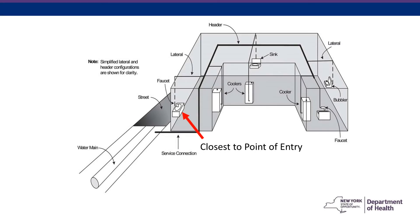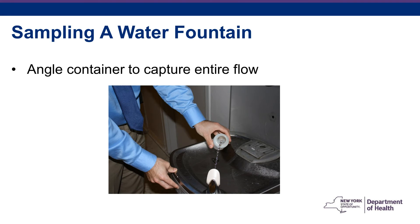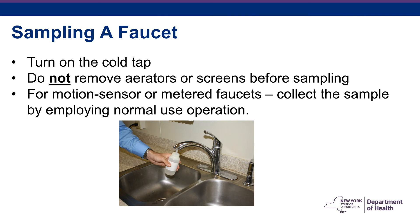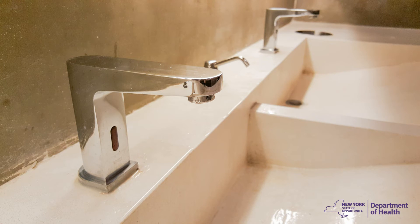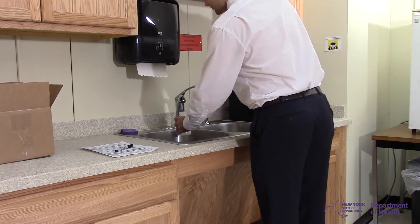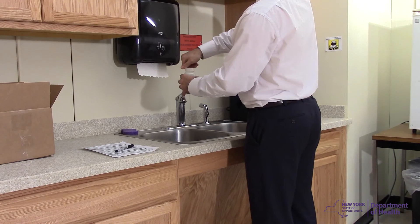Make sure no water has been drawn from the outlet before you collect the sample. Begin sampling at the cold water outlet closest to the point of entry, that is, where the water enters the building from the street. If a drinking water fountain is being sampled, angle the container's mouth in a way that it will capture the entire flow of water from the bubbler. If a faucet is being sampled, make sure you turn on the cold water tap. Do not remove aerators or screens prior to collecting your sample. If the outlet is a motion sensor or metered faucet, collect the sample as you would under normal use conditions. Turn on the cold water outlet and fill the container at the same rate that you would under normal use for drinking or cooking, without allowing any water to run down the drain.